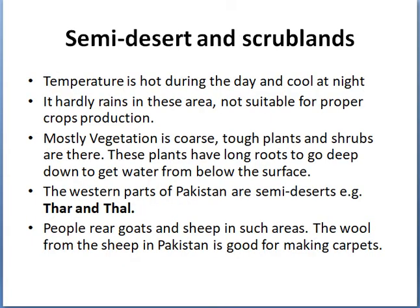Moving on to semi-deserts and scrublands. In these regions, temperature is hot during the day and cool at night. It hardly rains in these areas and hence it is not suitable for proper crop production. Mostly coarse, tough plants and shrubs are produced there, with long roots to reach water below the surface. The western parts of Pakistan are semi-deserts, for example the Thar and Thal. People rear goats and sheep in such areas, and wool produced from sheep in Pakistan is good for making carpets.